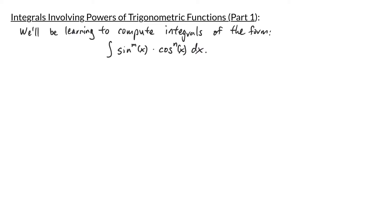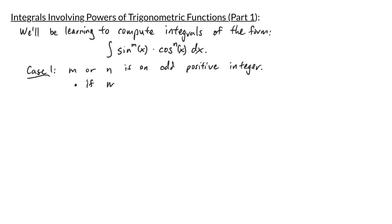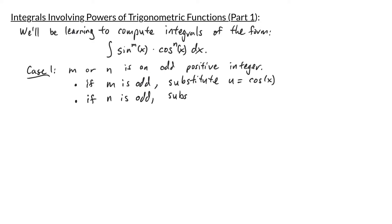The way we're going to integrate this is going to be different depending on m and n. In this video we'll focus on the case where m or n is an odd positive integer. If m is odd then we're going to approach this integral by doing a substitution u equals cosine of x. On the other hand if n is the odd number then we're going to substitute u equals sine of x. If both of the numbers are odd then you can choose either substitution.